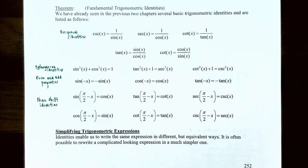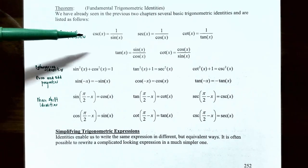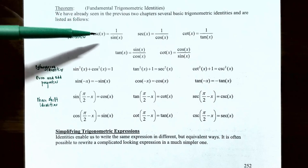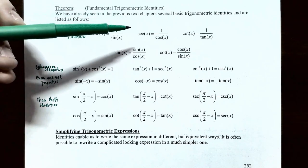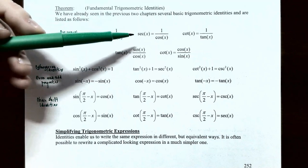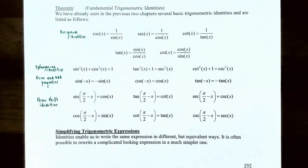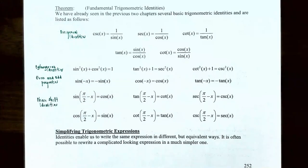The fundamental trigonometric identities include the reciprocal identities: cosecant of x equals 1 divided by sine of x; secant of x equals 1 divided by cosine of x; cotangent of x equals 1 divided by tangent of x. We also have the quotient identities: tangent of x equals sine of x divided by cosine of x, and cotangent of x equals cosine of x divided by sine of x.